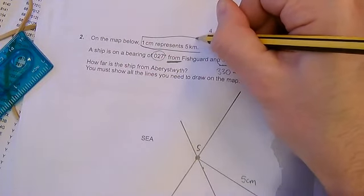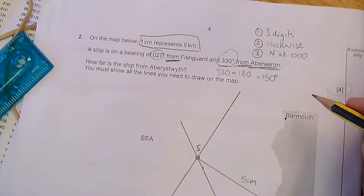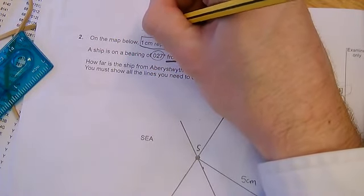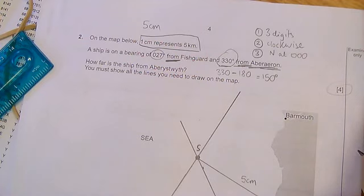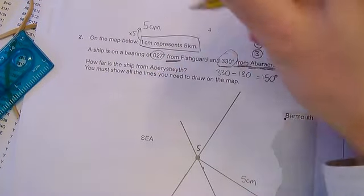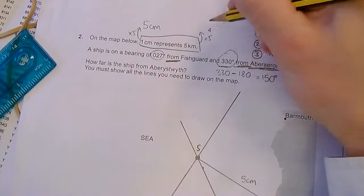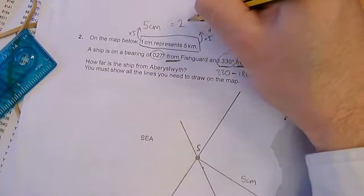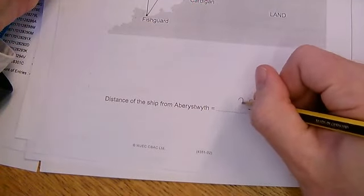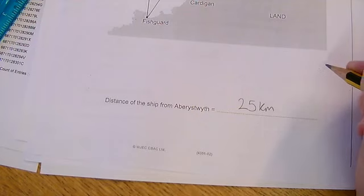We were told, right at the start, that one centimetre was the equivalent of five kilometres. So any idea what we might do next? Bear in mind, we know that it's five centimetres. You multiply it. If you times this by five, because one times five is five, you must do that to the kilometres. Five times five is 25 kilometres. So, that is how far the ship is from Aberaeron.